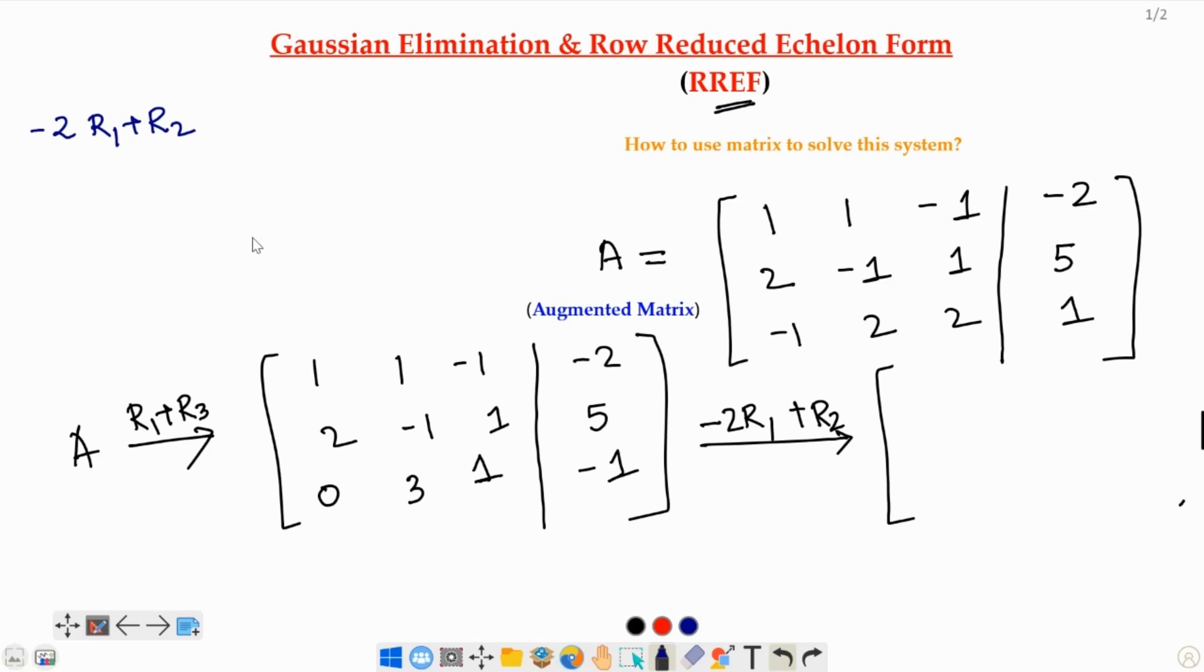So, for column 1 and in row 1 we have an entry 1. So, R1 is going to be 1 and for row 2 column 1 the entry is 2. So, negative 2 plus 2 is 0. This is going to be 0.